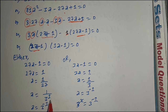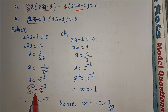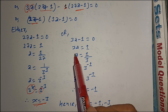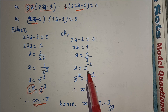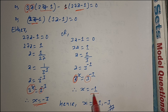Since a equals 1 upon 27 equals 1 upon 3 cubed equals 3 to the power minus 3. And since a equals 3 to the power x, we get 3 to the power x equals 3 to the power minus 3, so x equals minus 3. Also from the other factor, 3a minus 1 equals zero gives a equals 1 upon 3 equals 3 to the power minus 1, so x equals minus 1.